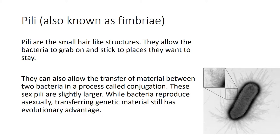Pili are small hair-like structures that allow bacteria to stick to a spot and stay there. Some larger pili, sometimes called sex pili, can be used for conjugation, where two bacteria trade some of their plasmids. This gives an evolutionary advantage by allowing bacteria to gain traits they didn't have before. Bacteria reproduce asexually, but conjugation serves the same function as sexual reproduction — providing genetic diversity.